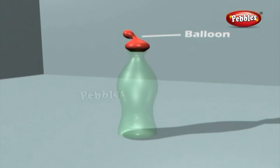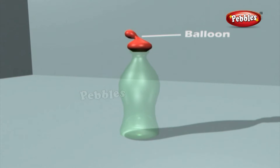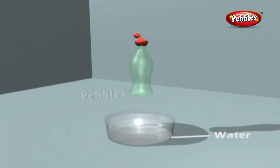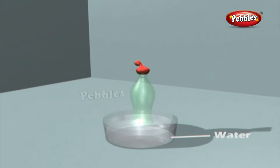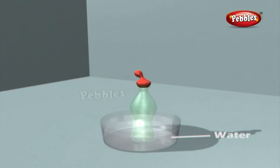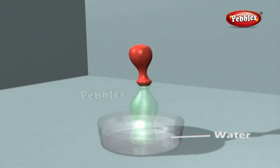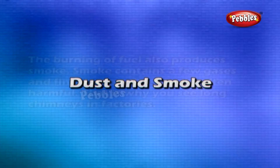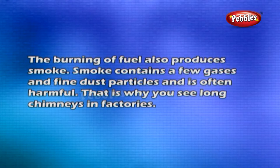Take a balloon, press it flat so there is no air inside it, and tie the mouth of the balloon to that of an empty bottle with a rubber band so that no air can escape. Now boil some water and place the bottle in the boiling water. The balloon expands due to the presence of heated air inside it.